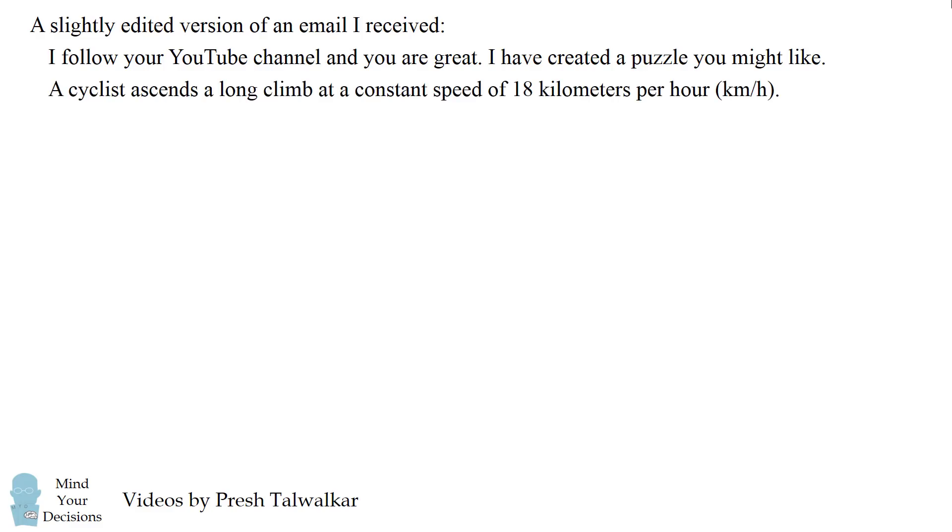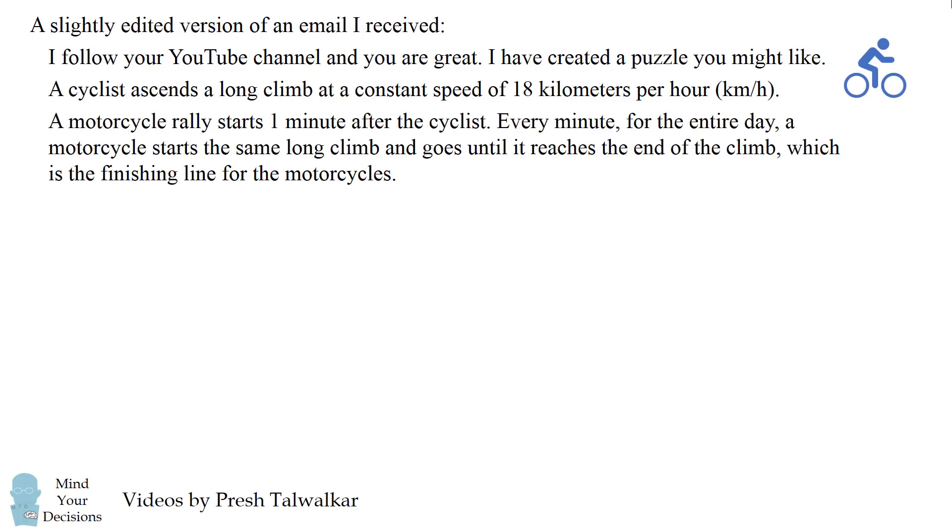A cyclist ascends a long climb at a constant speed of 18 kilometers per hour. A motorcycle rally starts one minute after the cyclist. Every minute for the entire day a motorcycle starts the same long climb and goes until it reaches the end of the climb, which is the finishing line for the motorcycles.